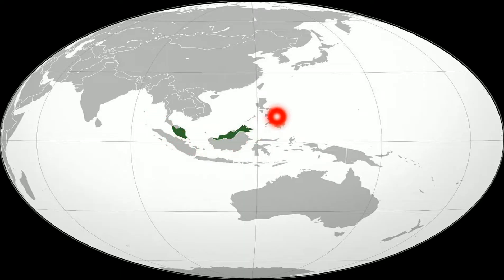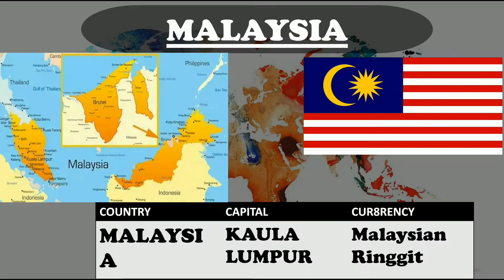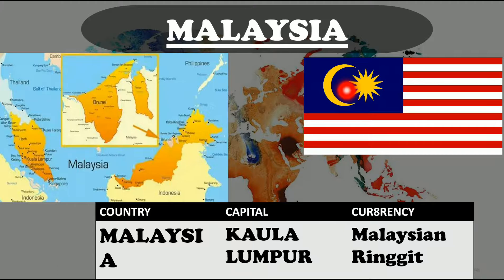The fifth country is Malaysia — a federal constitutional monarchy located in Southeast Asia. It consists of 13 states and three federal territories. These two parts together make Malaysia. This is the map of Malaysia. Its capital is Kuala Lumpur and its currency is the Malaysian Ringgit. This flag is also known as Jalur Gemilang, which means Strips of Glory, and is composed of 14 alternating red and white strips along with a blue canton bearing a crescent and a 14-point federal star.